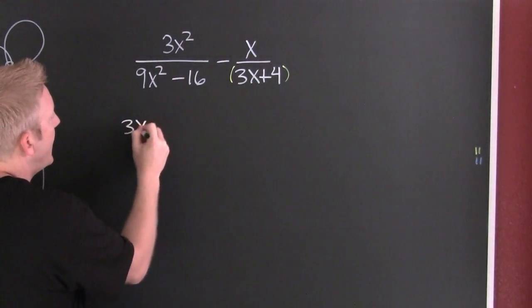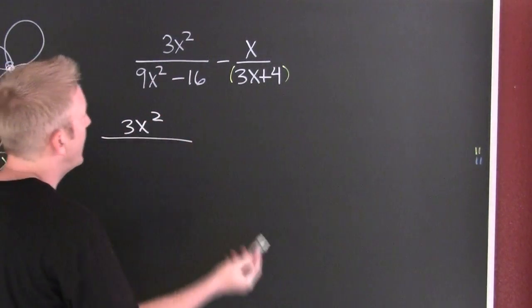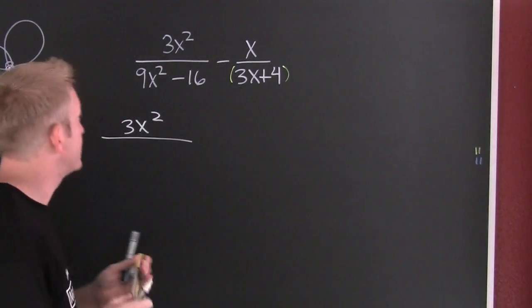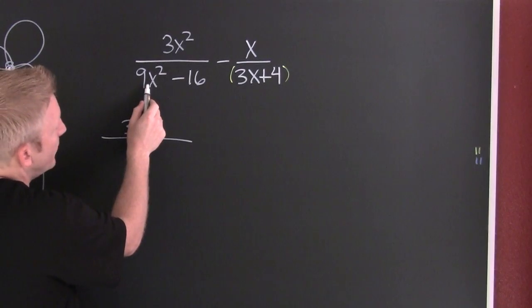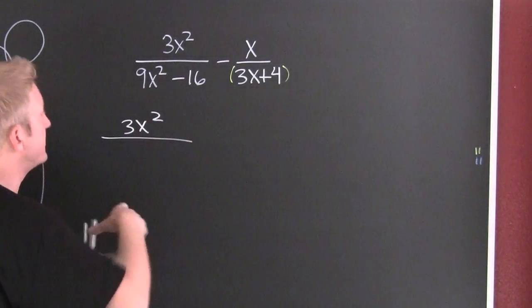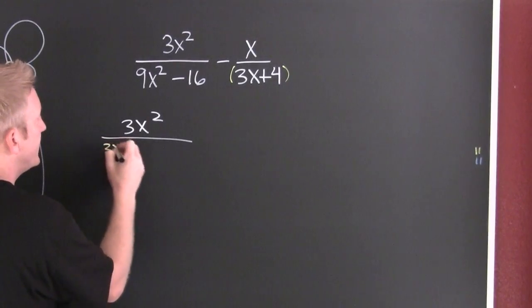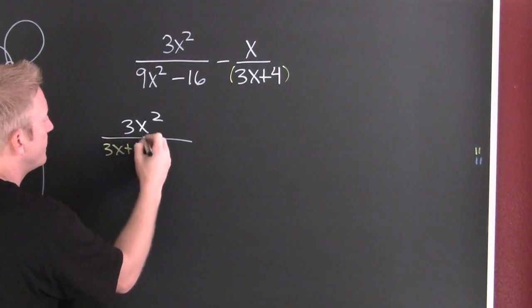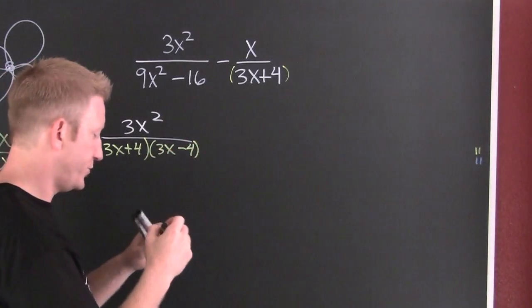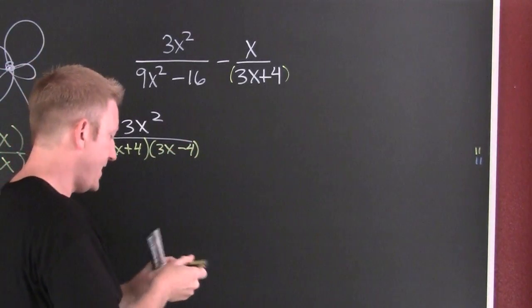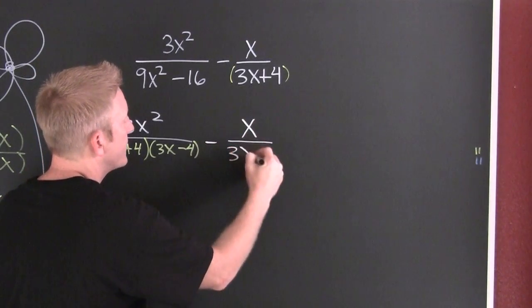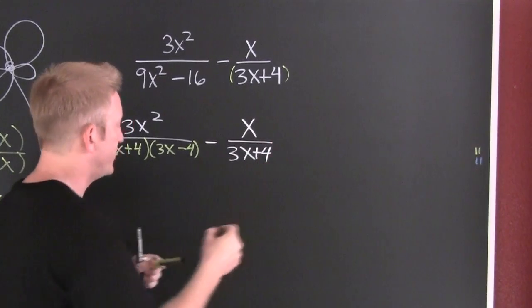So then my numerator is 3x squared divided by—it's claiming difference of squares. Is this the square of something? 3x. Is that the square of something? 4. So every single time it's 3x plus 4 times 3x minus 4. And then I'm still gonna subtract off x over 3x plus 4.